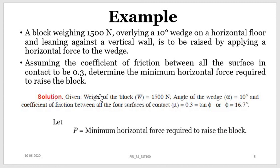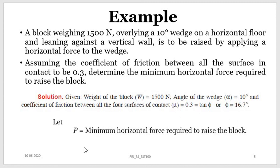From the data, the weight W equals 1500 Newton, the angle of the wedge alpha equals 10 degrees, and the coefficient of friction between all contact surfaces is 0.3. Since mu equals 0.3, phi equals tan inverse of 0.3, which is 16.7 degrees. Let P be the minimum force applied in the horizontal direction to raise the block.